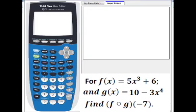f(x) = 5x³ + 6 and g(x) = 10 - 3x⁴. We need to figure out this composite value f(g(-7)). So first of all, you need